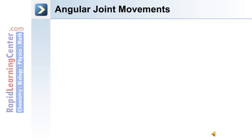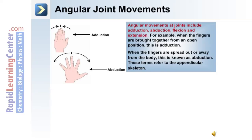Joints also permit angular movements. Angular movements include adduction, abduction, flexion, and extension. For example, when the fingers are brought together from an open position, this is adduction. When the fingers are spread out, or away from the body, this is known as abduction.